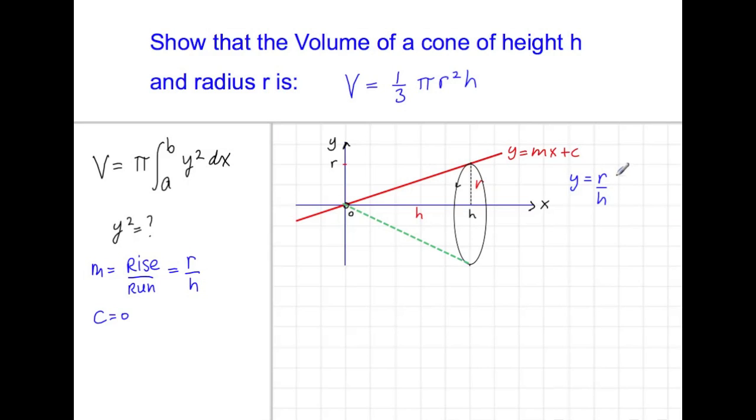So the equation of this line is y equals r over h times x. So y squared would be r squared over h squared times x squared. Now we're ready to start our integration.